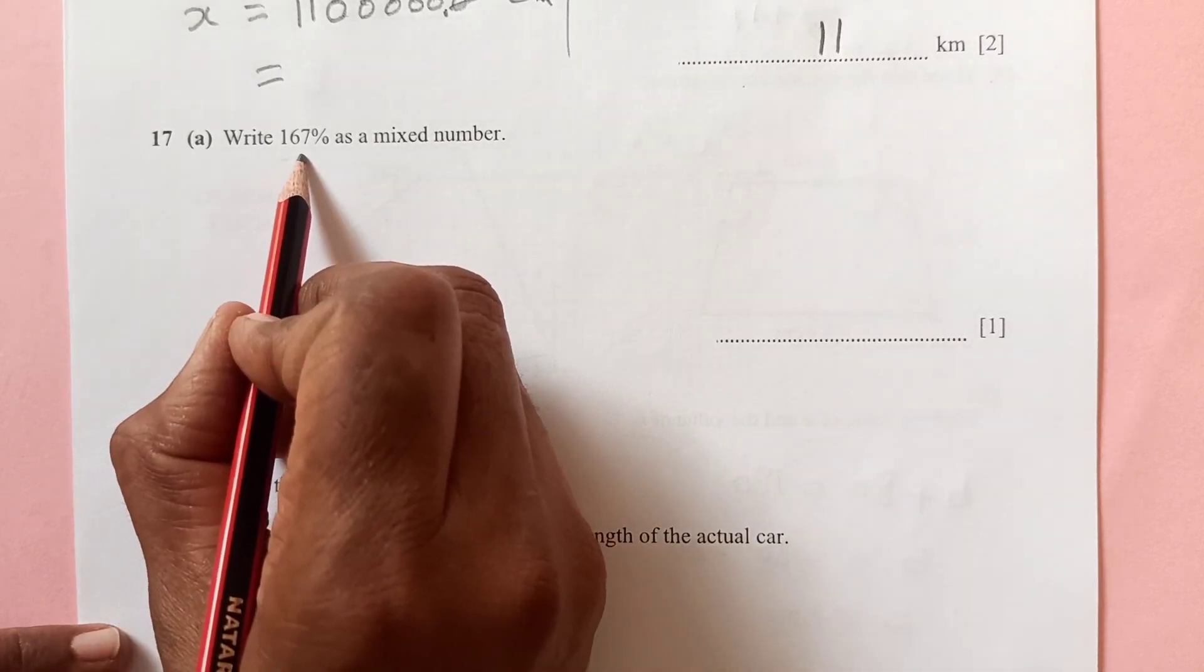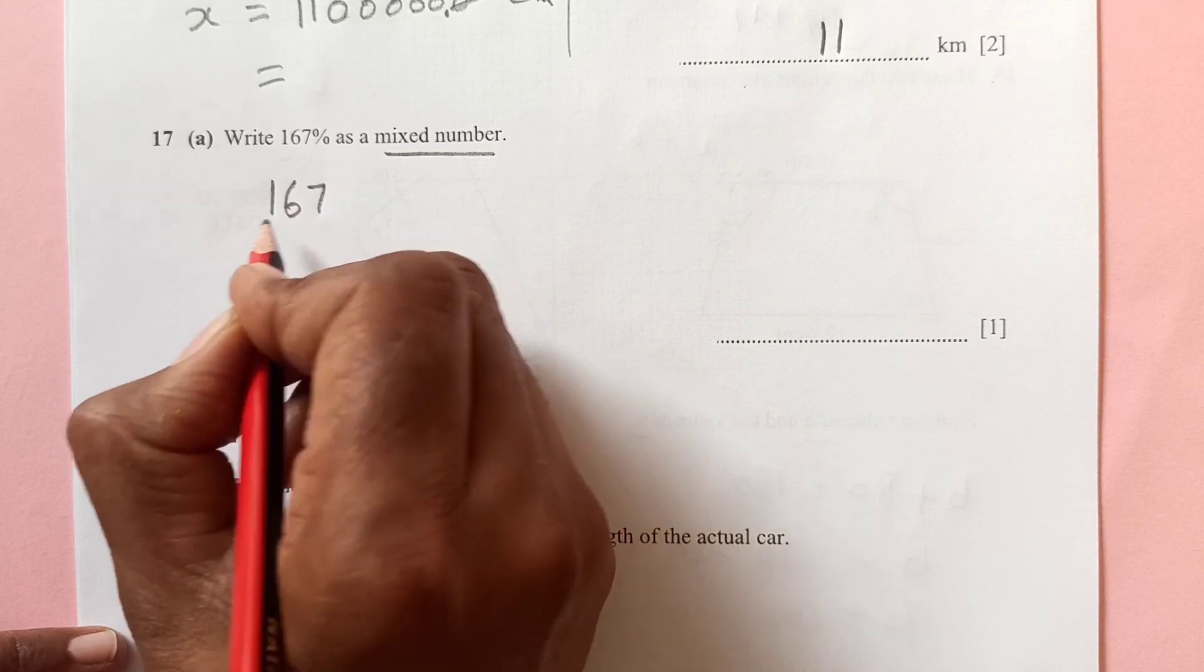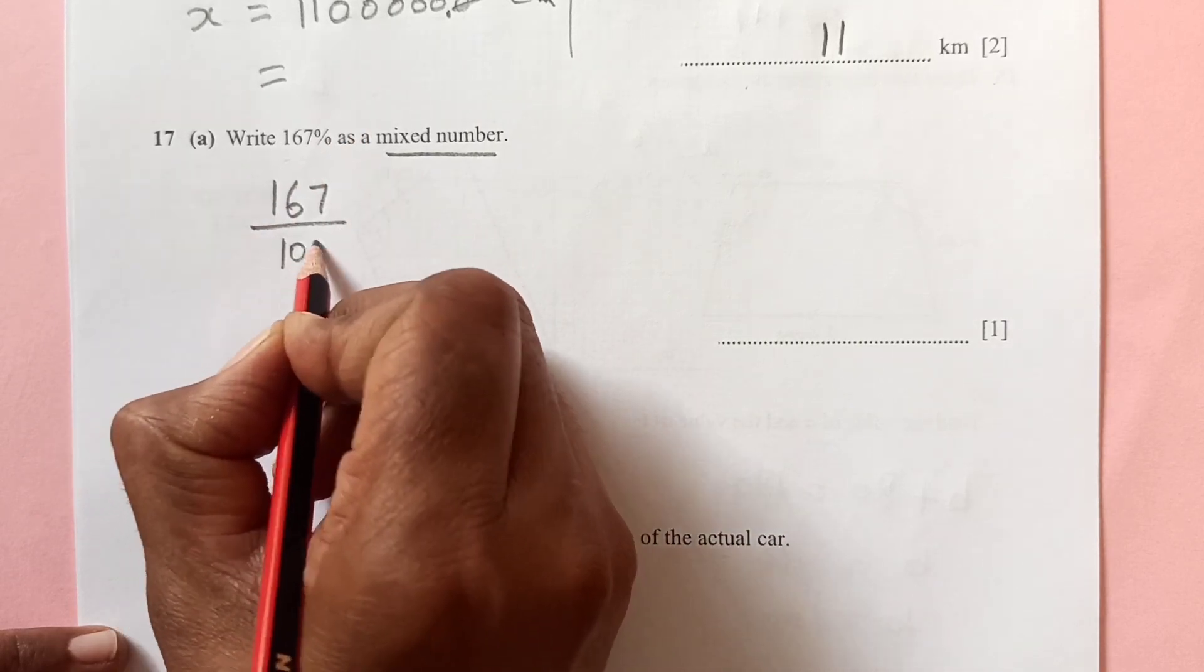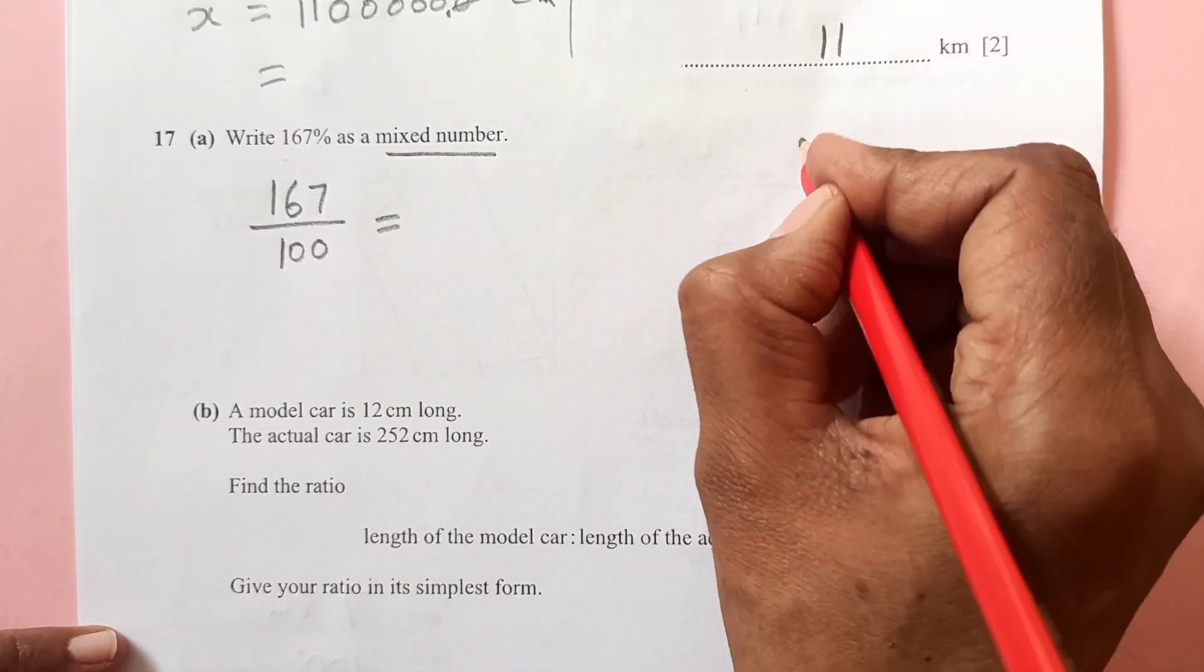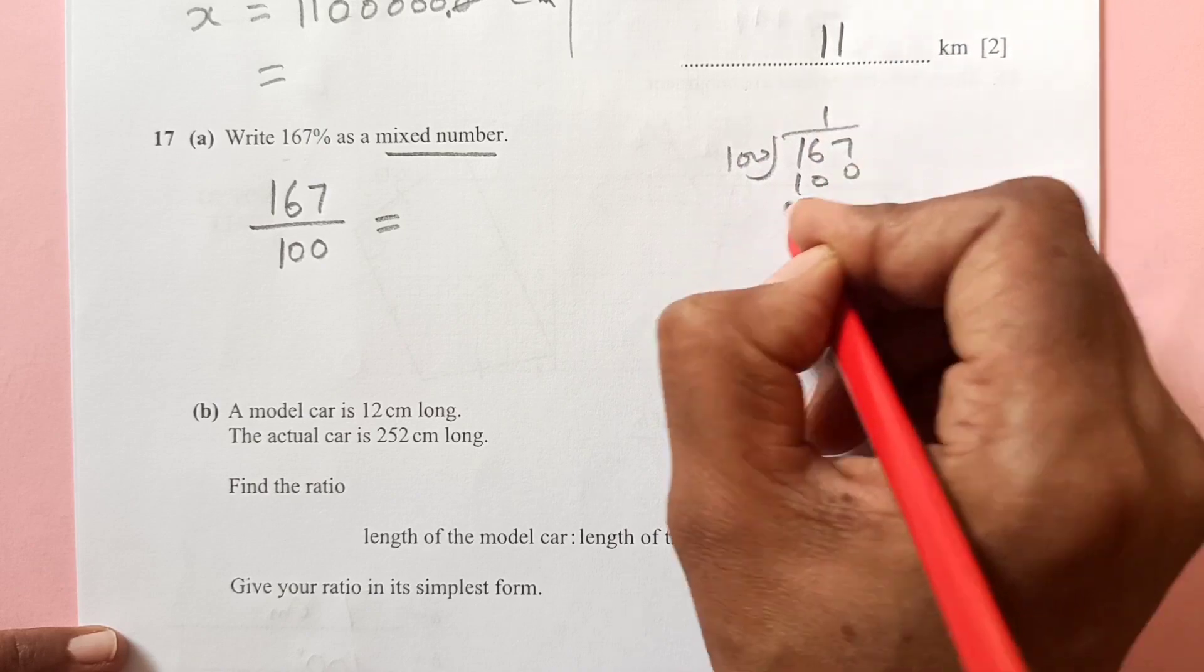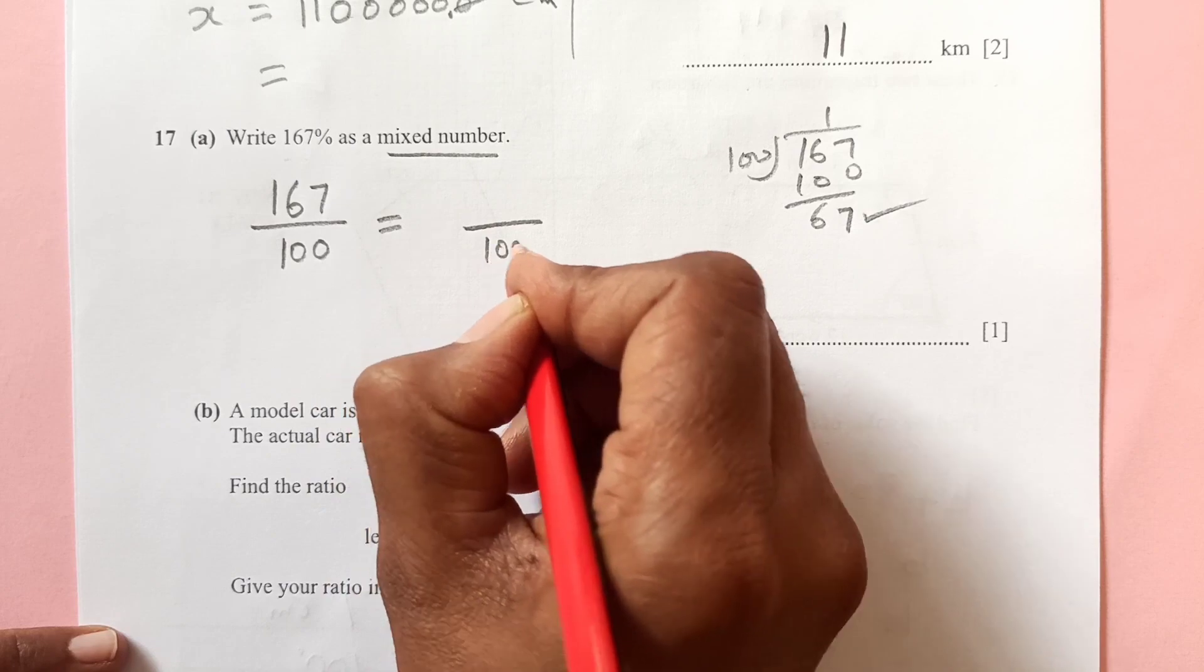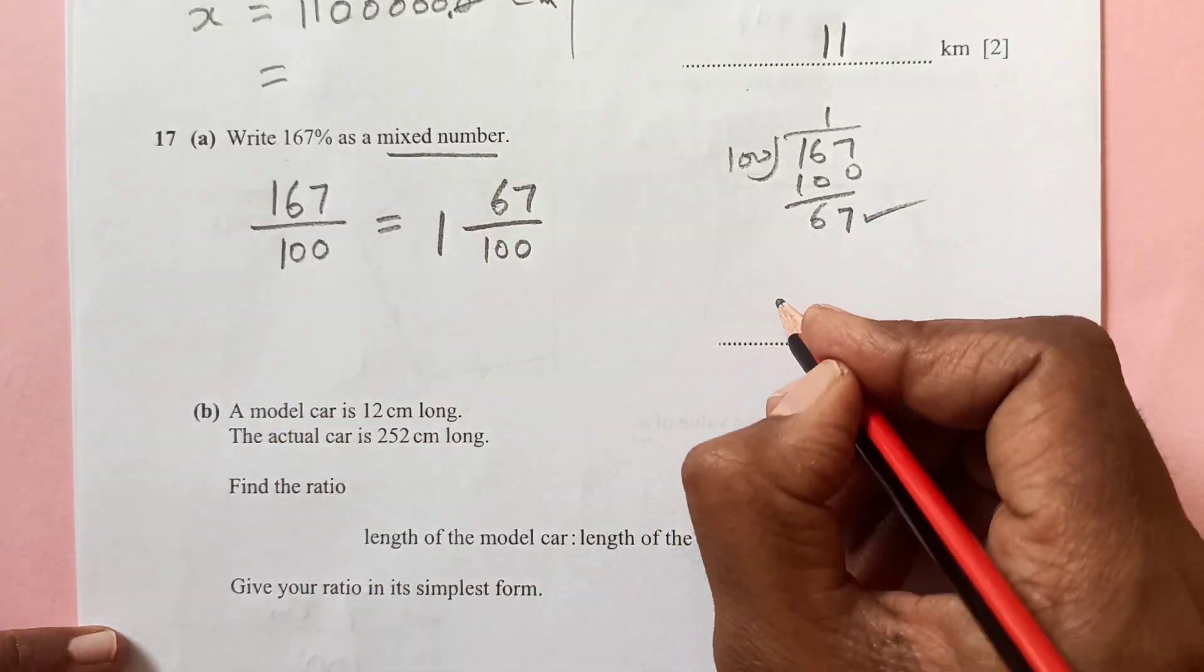Number 17, write down 167 percent as a mixed number. 167 percent divide by 100. So when you divide 167 by 100, you will have 67 as remainder. Then remainder goes up, divisor is here. So 1 and 67 over 100.